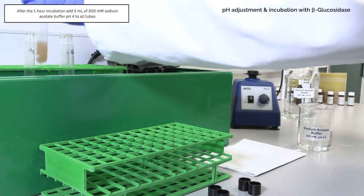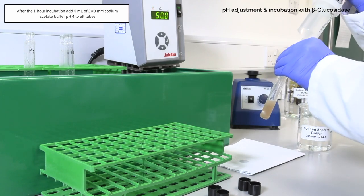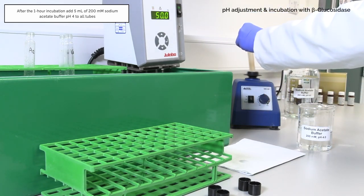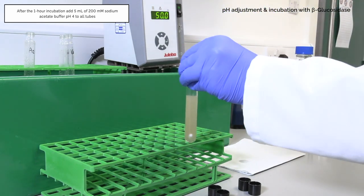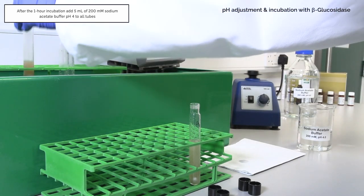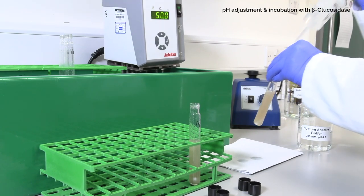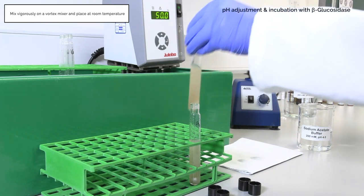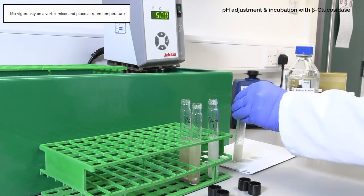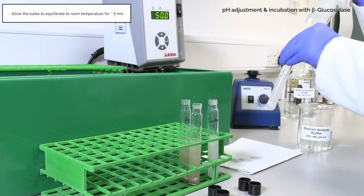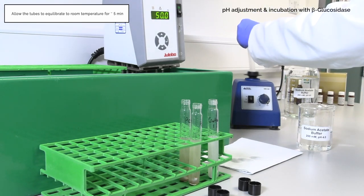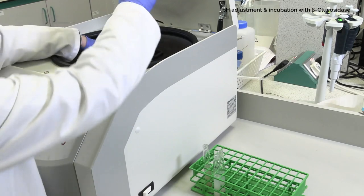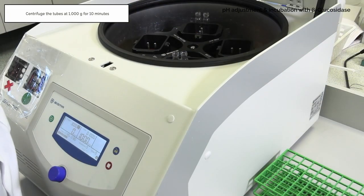After the 1 hour incubation, remove the caps from the test tubes and add 5 milliliters of 200 millimolar sodium acetate buffer pH 4. Mix vigorously on a vortex mixer and place at room temperature. Allow the tubes to equilibrate to room temperature for approximately 5 minutes. Centrifuge at 1000 g for 10 minutes.